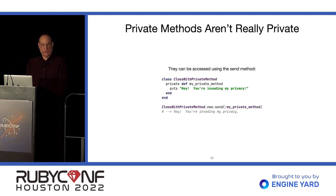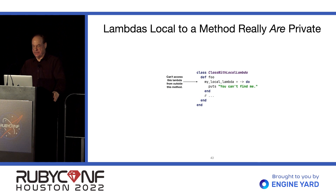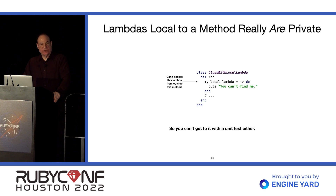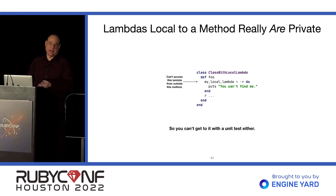Private methods are not really private — you can call send to call them. If you want something to be really private, you could put it in a lambda and assign it to a local variable, and that would be totally invisible to the outside. Maybe if you don't want library users to use things you're going to change later, a lambda would work. Unfortunately, it also means you can't get to it with a unit test — so if you really need to unit test the lambda's behavior, you're out of luck. You probably want to make that a method instead.